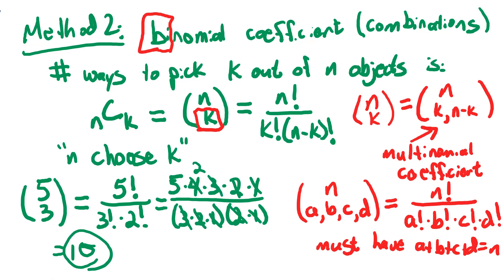So two ways to do this. One thing in these counting problems is sometimes they're a little tricky and you can make subtle mistakes. It's nice to have more than one method, because if you agree you have a decent chance of being correct. If you don't agree, you know at least one is wrong. It's a nice check if you've got extra time on an exam, or you're just trying to learn and want to do things different ways.